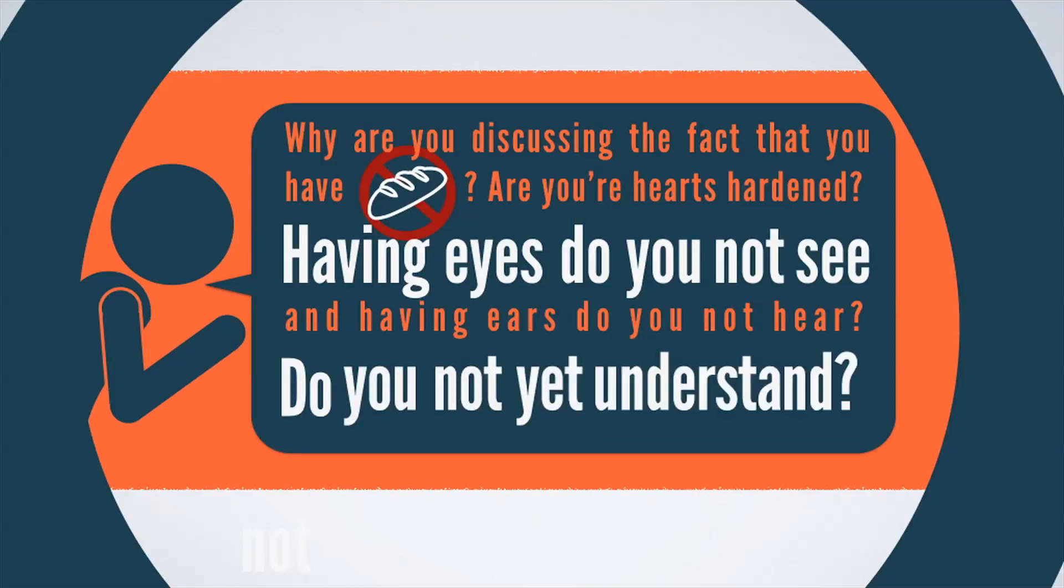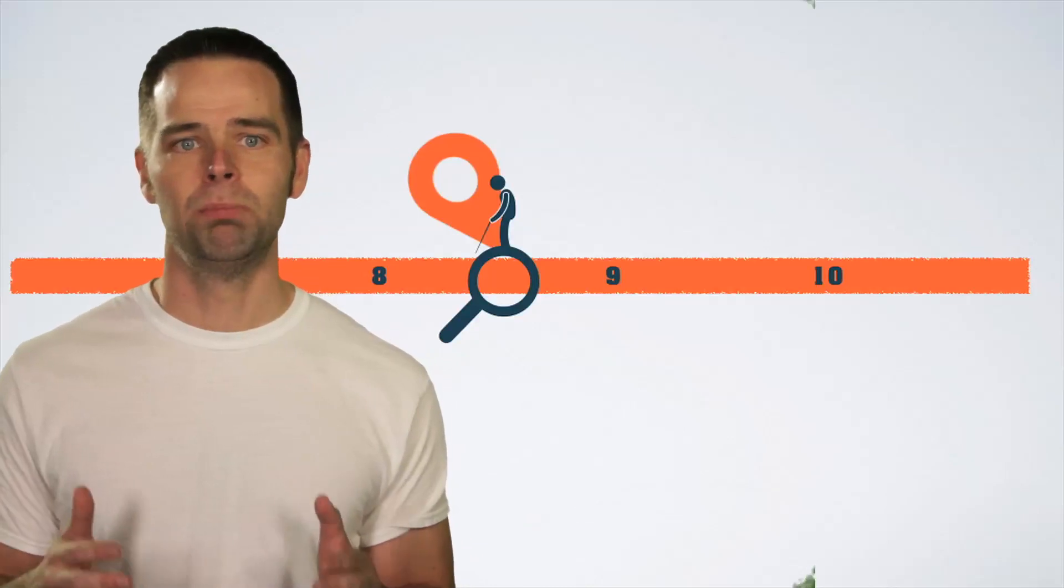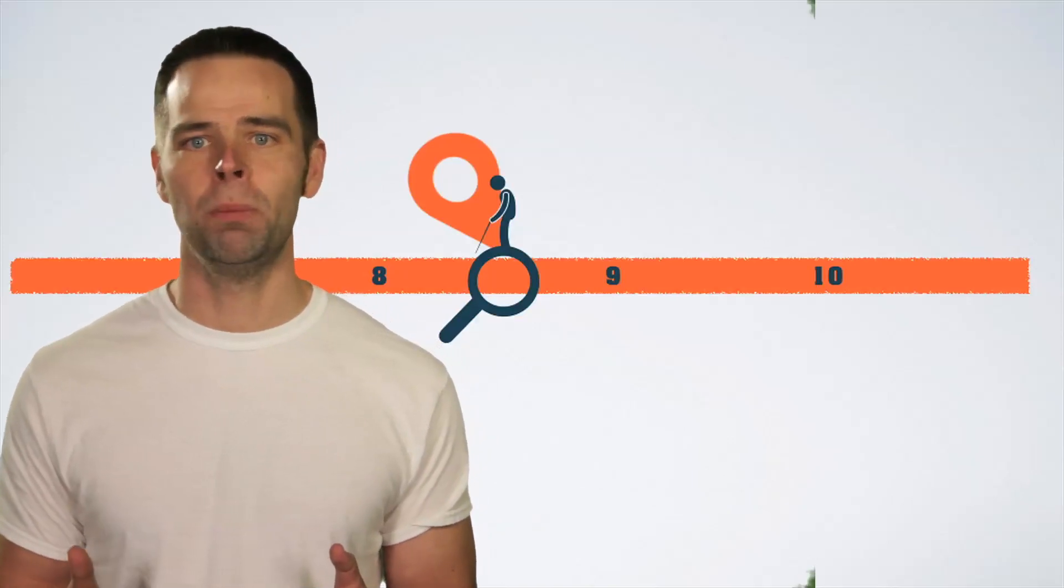You see that? Jesus has just linked blindness with a lack of understanding. Encountering a blind man in the very next story is not by accident. His blindness illustrates the disciples' lack of understanding. And his partial healing, their partially opened eyes.